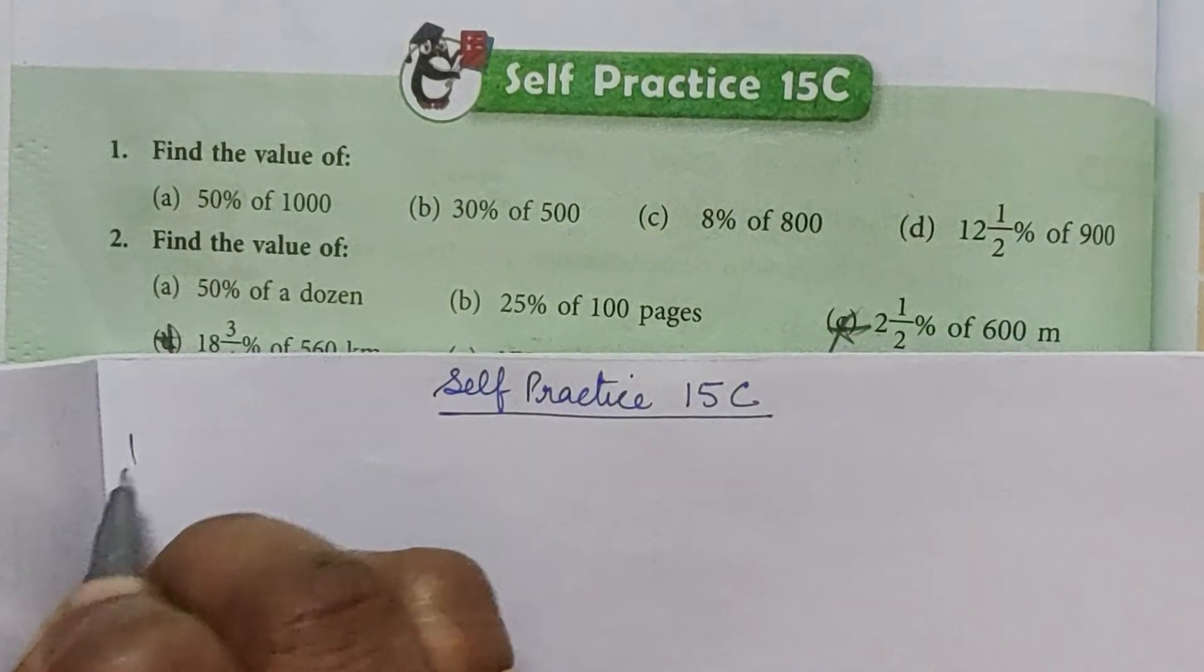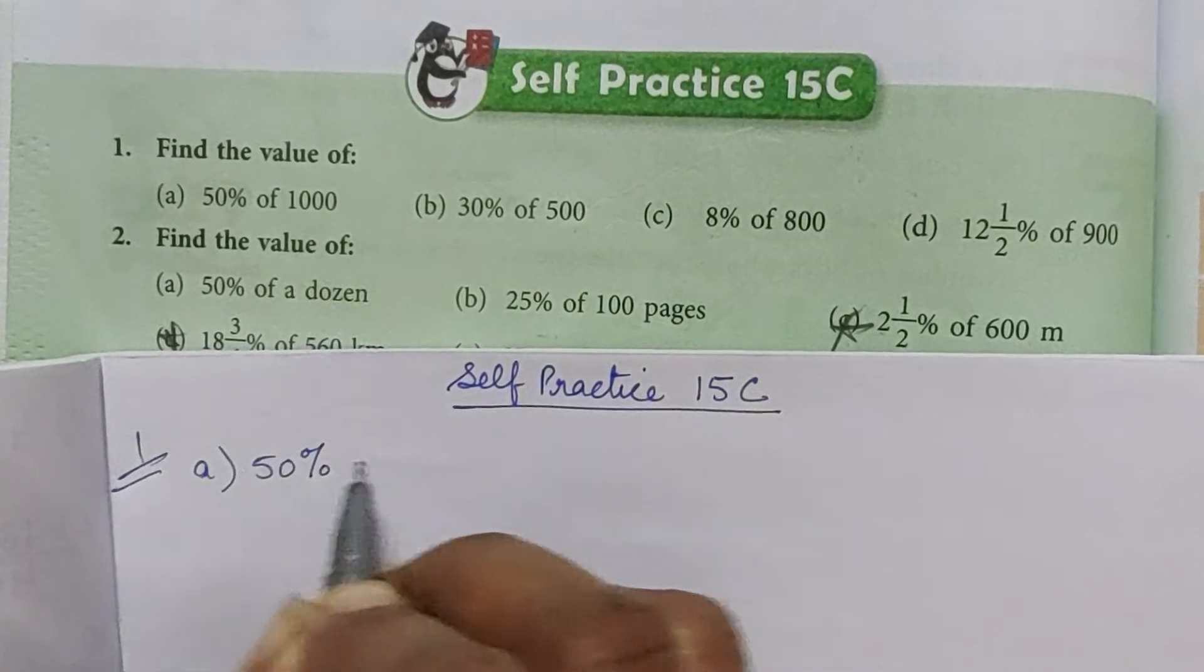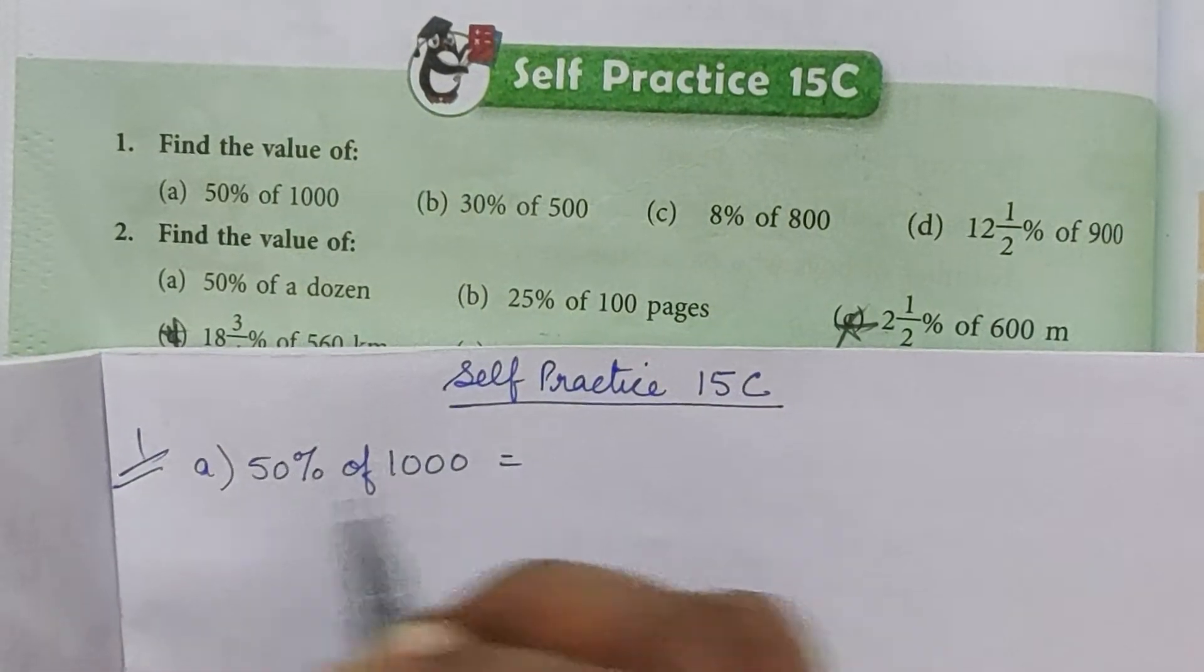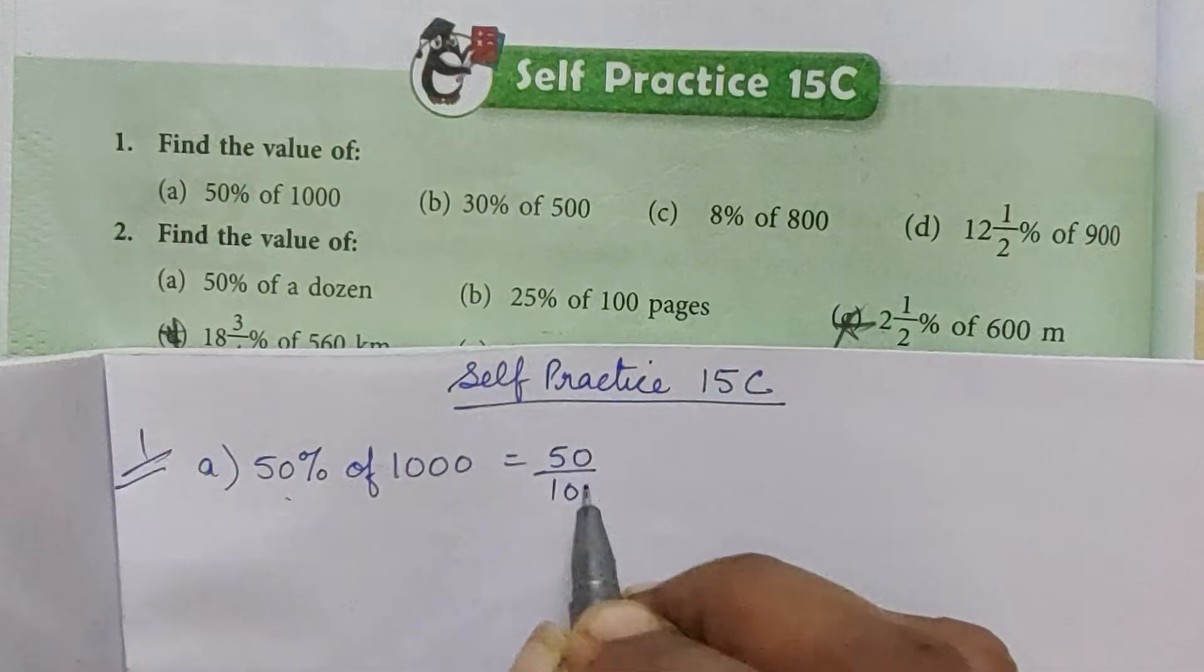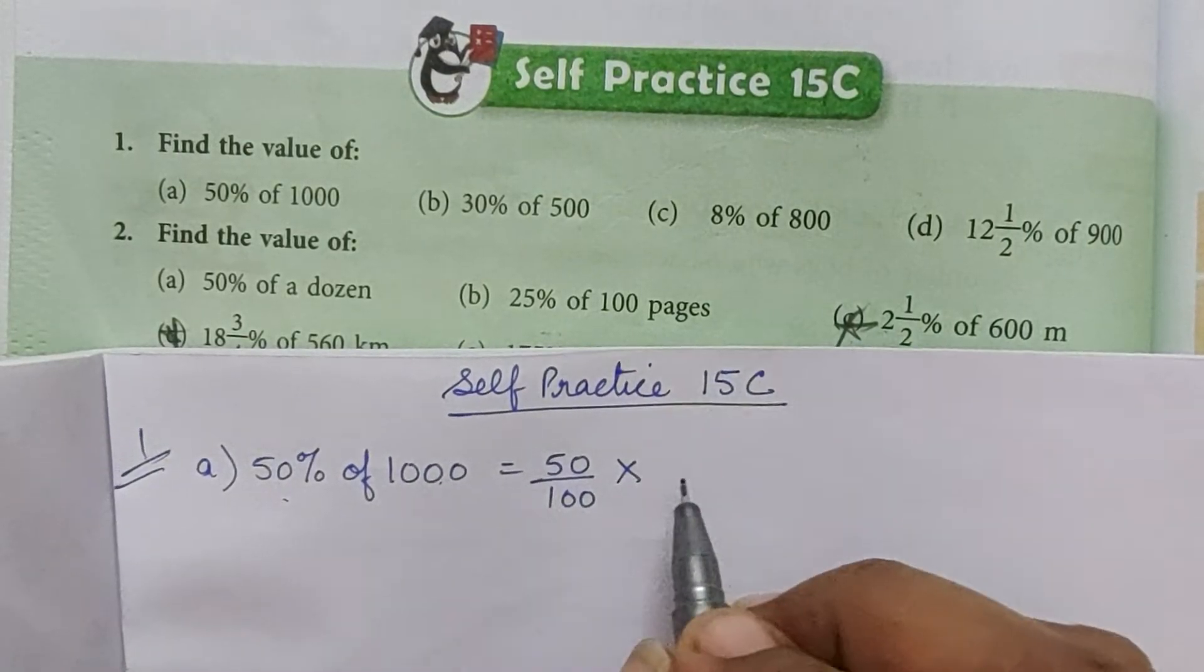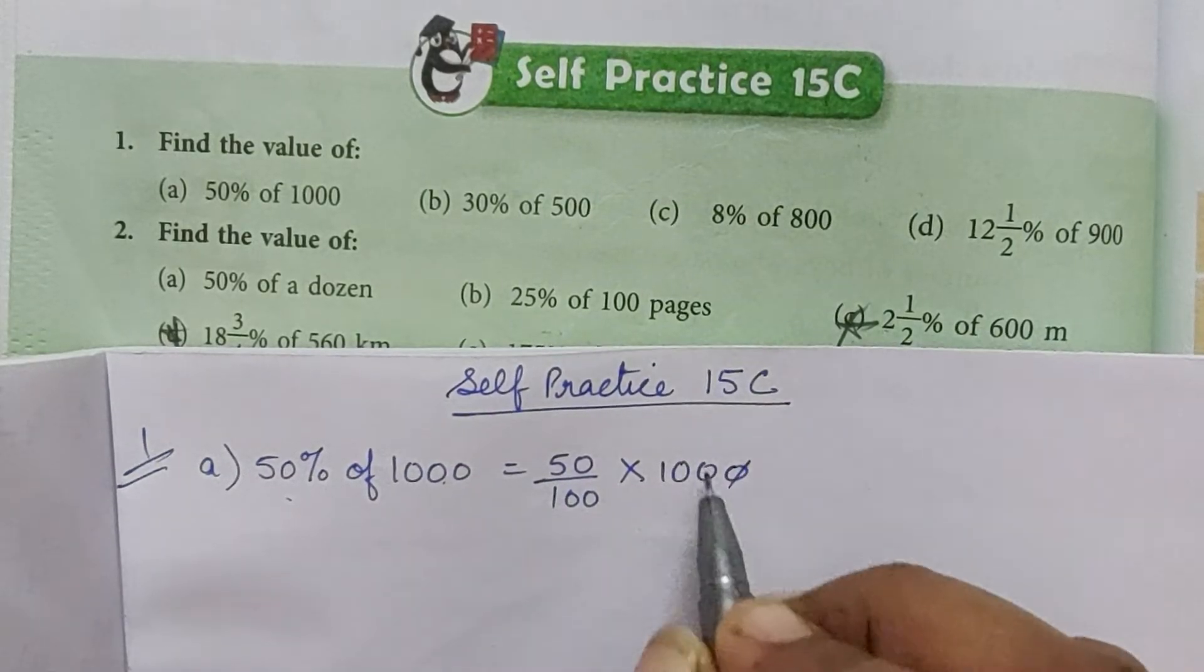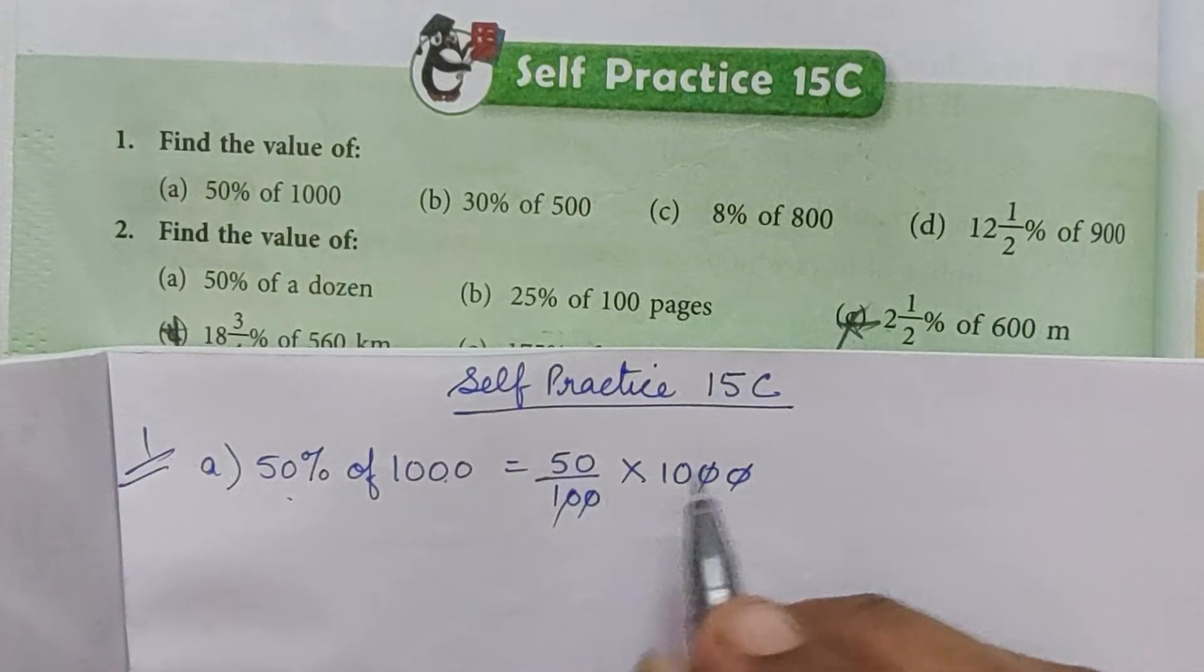Question number one, part a: 50% of 1000. This means 50% is 50 by 100 into 1000. Now 50 times 10 is equal to 500.